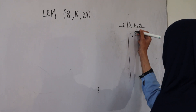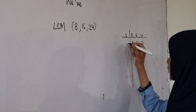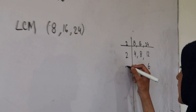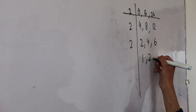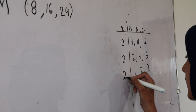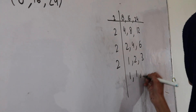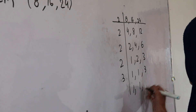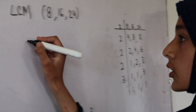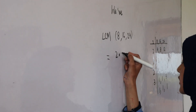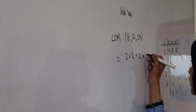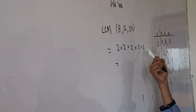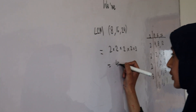Using the common division method: dividing by 2 gives 4, 8, 12; dividing by 2 gives 2, 4, 6; dividing by 2 gives 1, 2, 3; then 1, 2, and 3 come down, dividing by 3 gives 1, 1, 1. So the LCM is equal to 2 × 2 × 2 × 2 × 3, which equals 16 × 3 = 48.